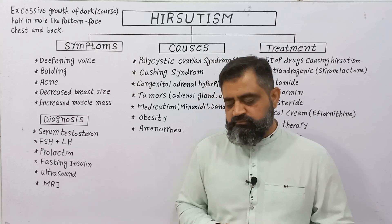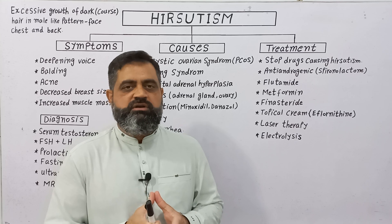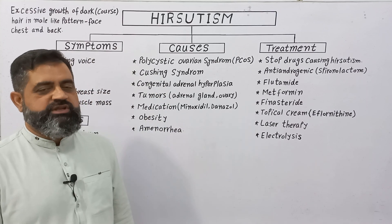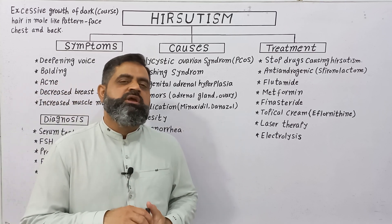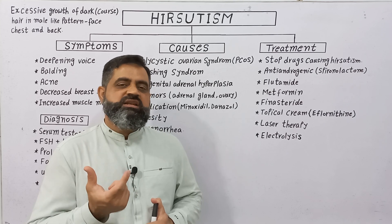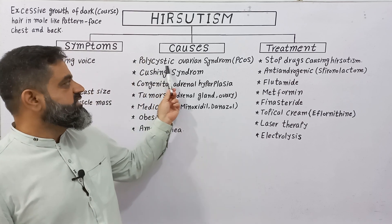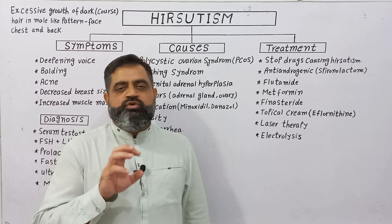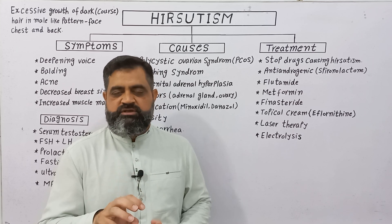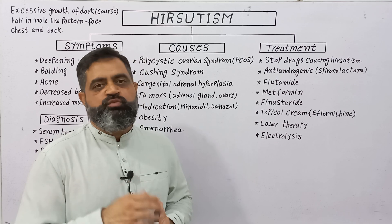The main causes of hirsutism — though no single exact cause is known — include polycystic ovarian syndrome (PCOS). In this condition, a female body develops cysts inside the ovaries, either in the right or left ovary. There could be a single large cyst or multiple smaller cysts. These cysts imbalance the hormones produced by the ovary, leading to hirsutism. To treat hirsutism caused by PCOS, certain medications or surgical procedures can be used to remove the cysts.